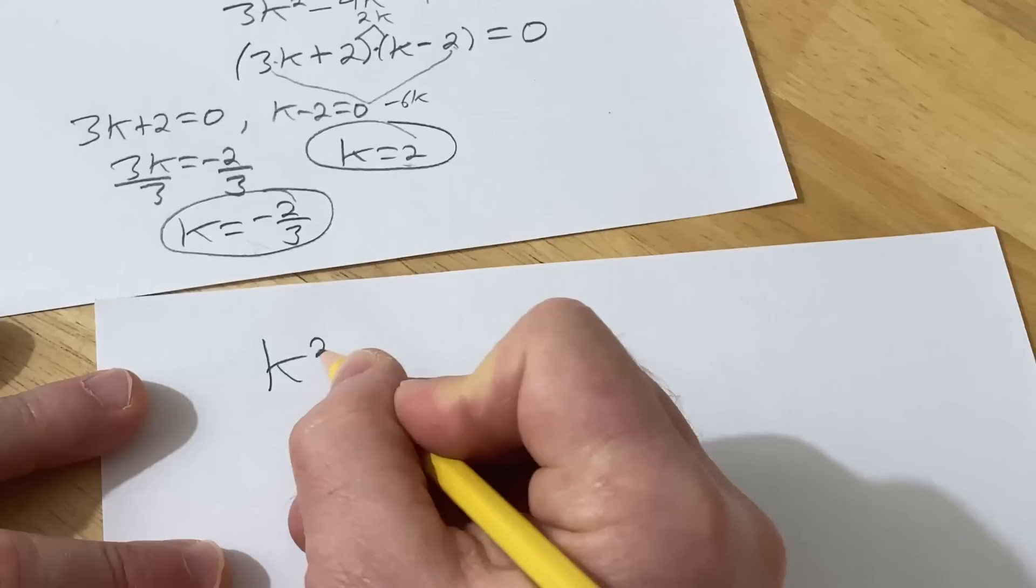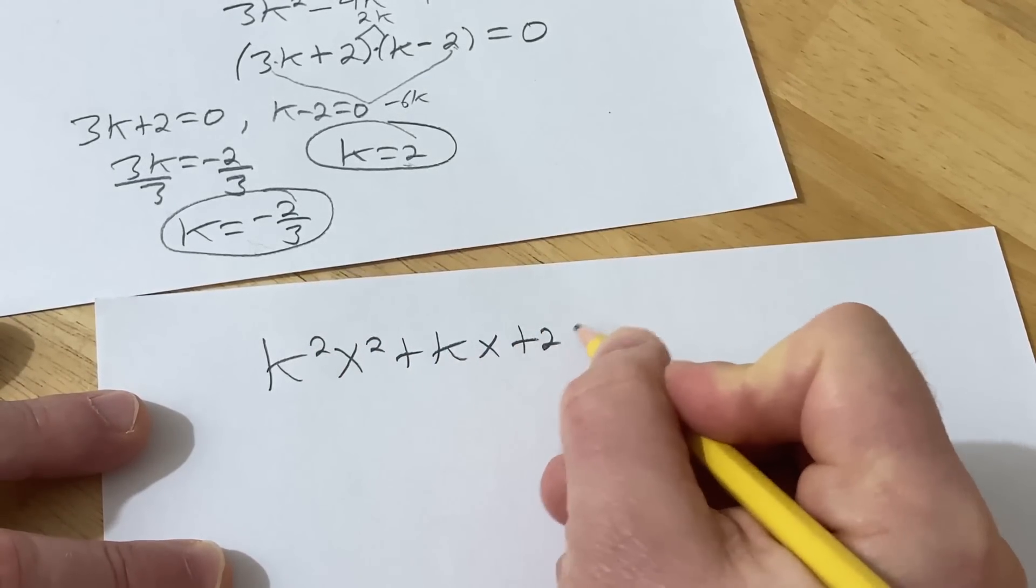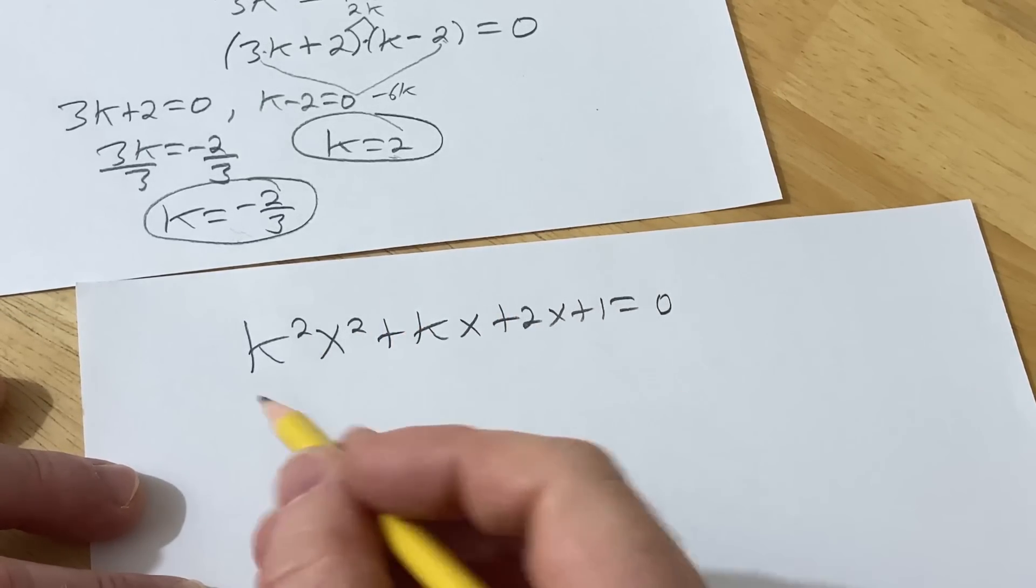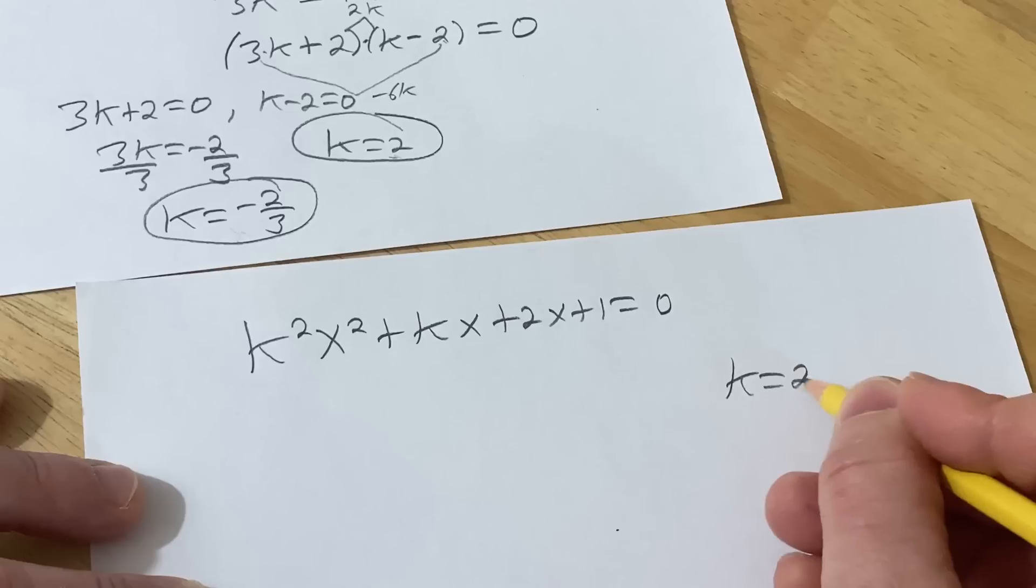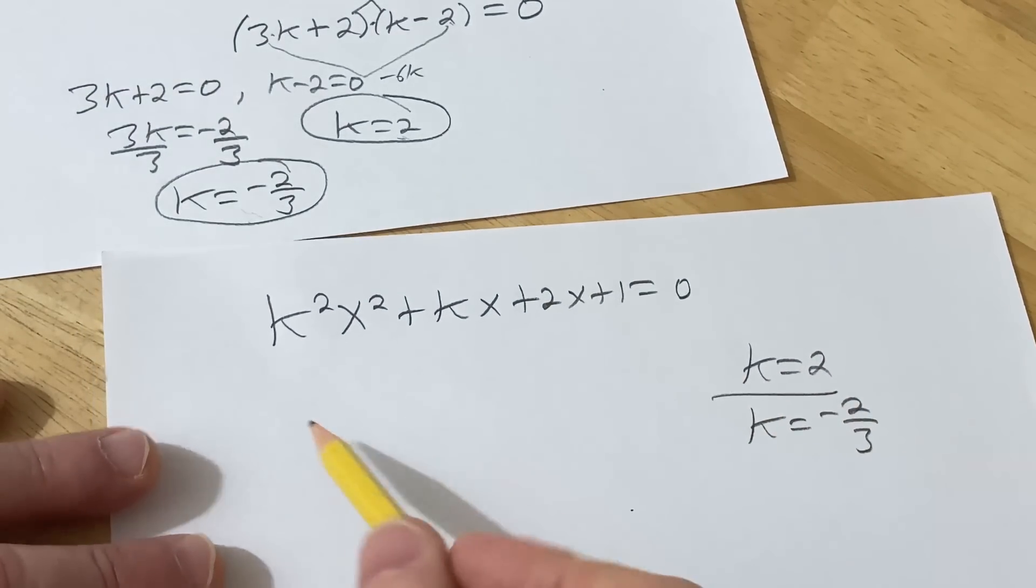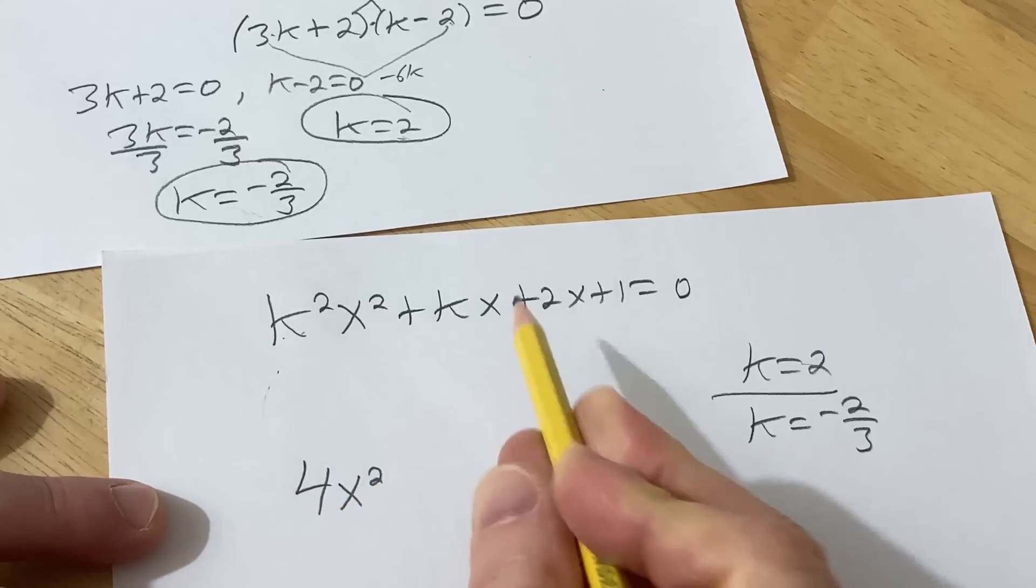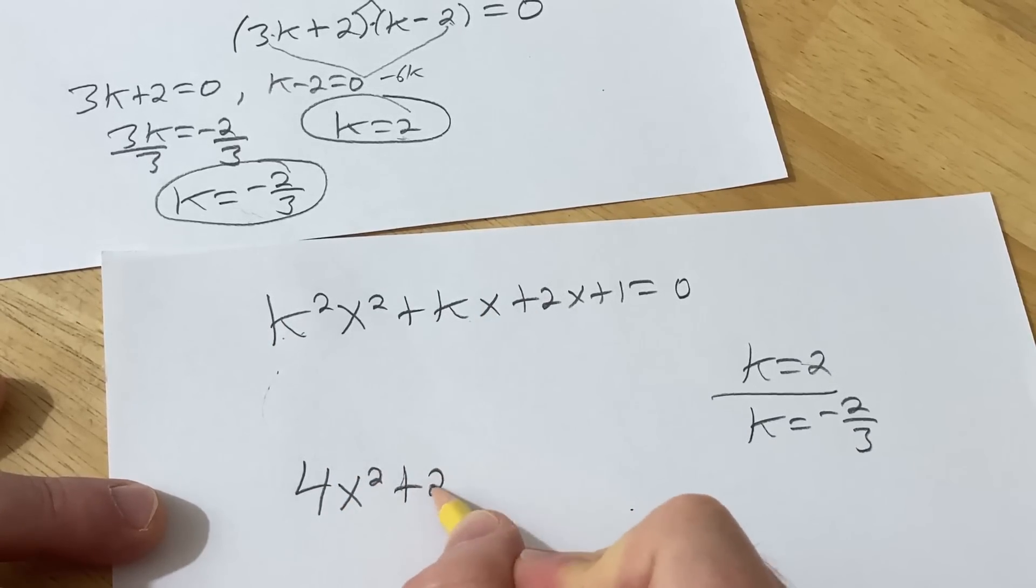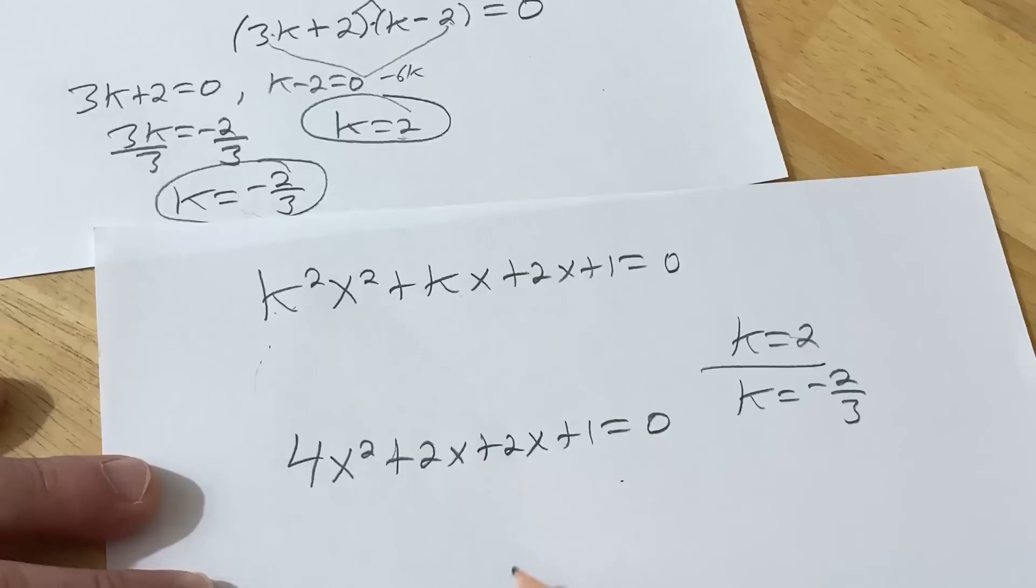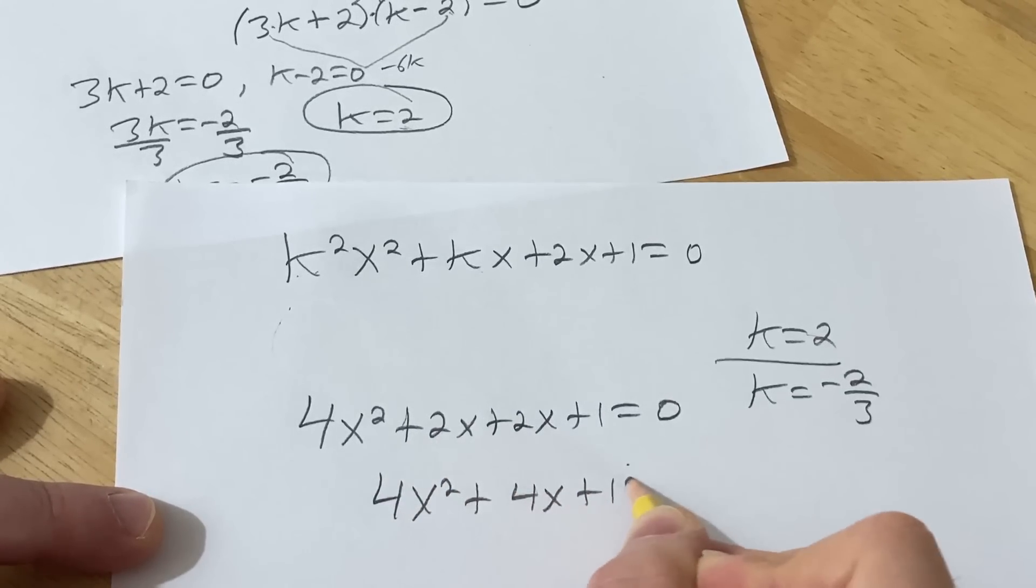I'm going to write it again. k squared x squared plus kx plus 2x plus 1 equals 0. And we had two values of k in this problem that should lead to equal roots. k equals 2 and k equals negative 2 thirds. So let's go ahead and plug in 2 and see what happens. Plugging in 2, we're going to get 2 squared, so that's 4. Plugging in 2, we get 2x plus 2x plus 1 equals 0.